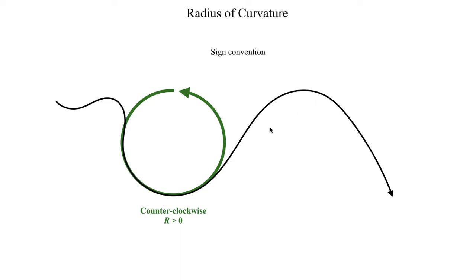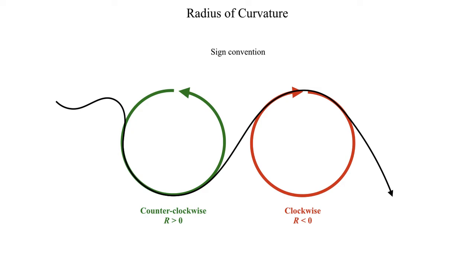Over at this apex, where the flow pattern goes up and then down, if I draw a circle to fit that flow pattern going in the same direction, I trace out a circle that goes in the clockwise direction. By convention, a clockwise radius of curvature is negative. So: positive radius of curvature means the circle goes counterclockwise, and negative means it goes clockwise. The whole idea is to draw a circle that fits and represents the flow pattern. This sign convention becomes important later when we look at gradient wind balance.